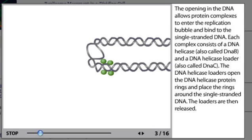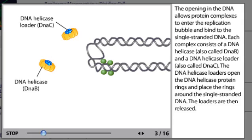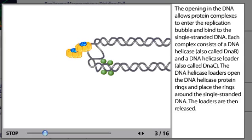The opening in the DNA allows protein complexes to enter the replication bubble and bind to the single-stranded DNA. Each complex consists of a DNA helicase, also called DnaB, and a DNA helicase loader, also called DnaC. The DNA helicase loaders open the DNA helicase protein rings and place the rings around the single-stranded DNA. The loaders are then released.